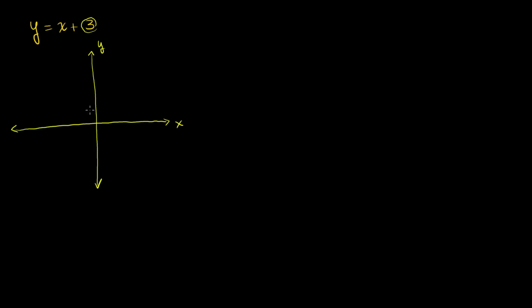So this line is going to look like this. We intersect at 0 comma 3, and we have a slope of 1. So every 1 we go to the right, we go up 1. The line will look something like that. And remember, when I'm drawing a line, every point on this line is a solution to this equation.